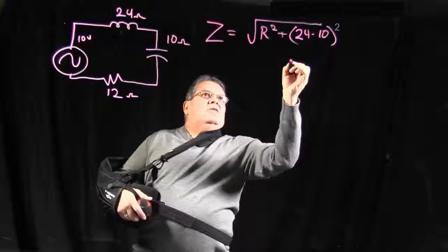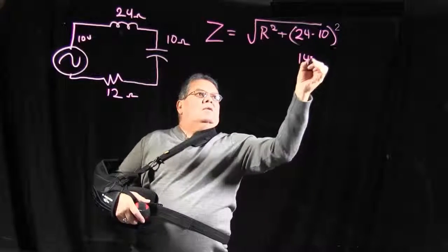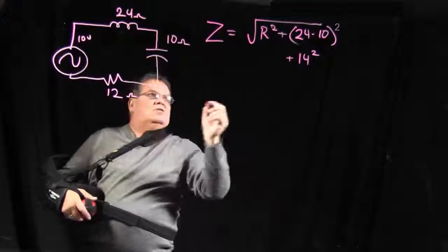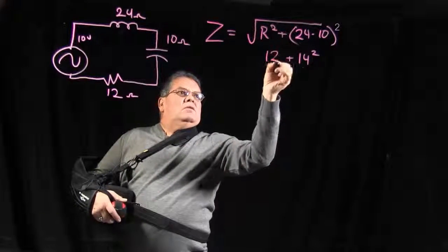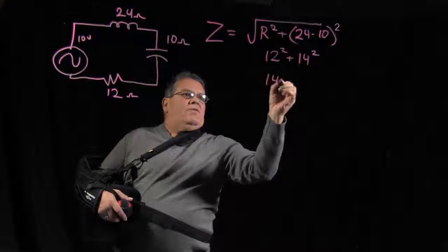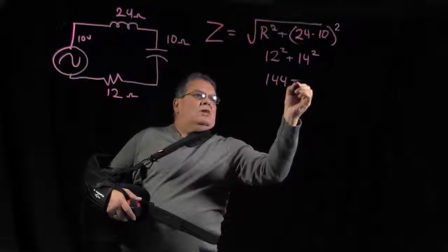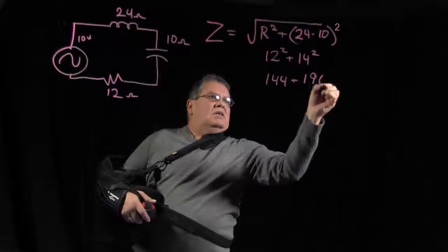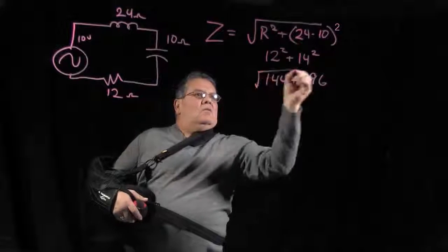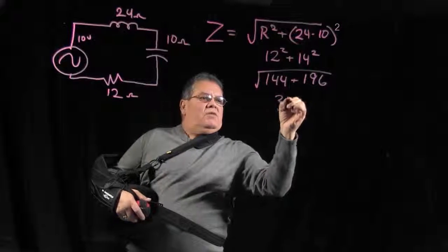Okay, so let's go ahead and work that and that's 14 squared plus our resistance which is 12 squared. 12 squared is 144 plus our 196 which is our 14 squared. We'll add those up, get 340.